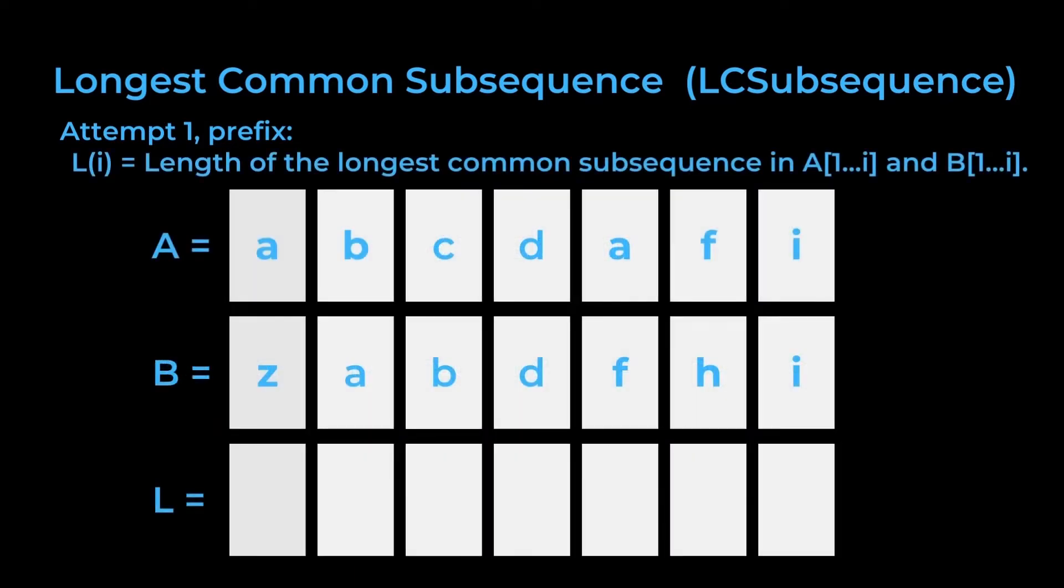We'll start from the back of the strings as our goal is a recursive formulation. i is equal to i, so this is a good start. We have a match and we can add 1 to a previous subproblem's solution. But when we move back one column, this is no longer a match, and here we run into a bit of a problem.